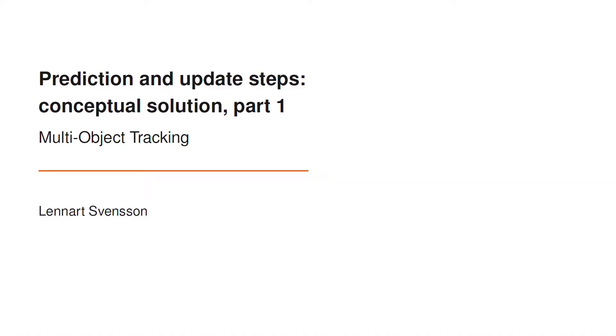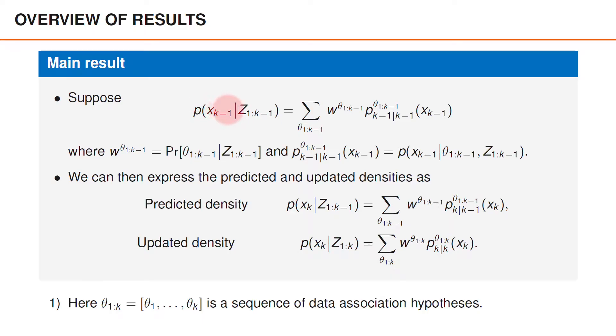Let us first summarize the main results that we are about to present. Suppose we have expressed the posterior at time k-1 as a sum over all possible sequences of hypotheses up to time k-1 of a weight w times the density p of x_{k-1}.